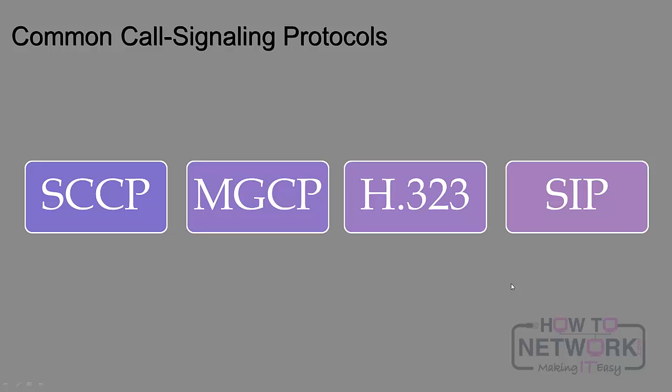When we talk about call signaling, voice gateways have call signaling occurring with one of a number of different protocols. The four protocols you're primarily going to deal with are SCCP — the skinny call control protocol — MGCP — the media gateway control protocol — the standard H.323, and the other standard SIP. You'll have to analyze your use case and decide which makes sense for a given implementation or client.